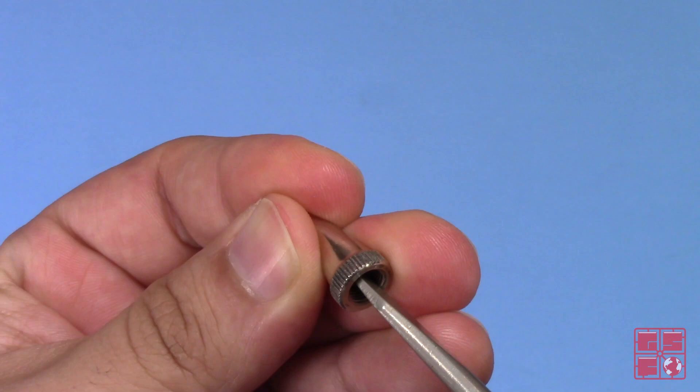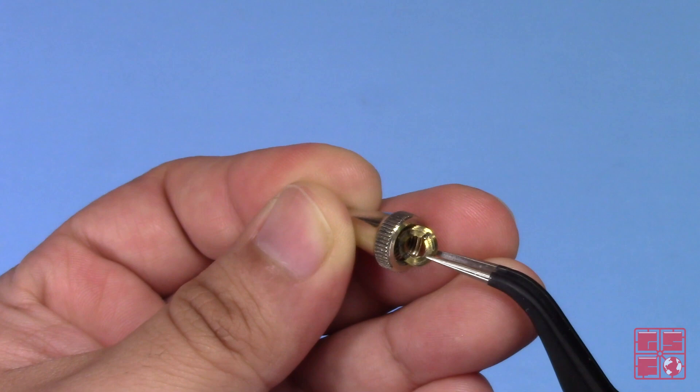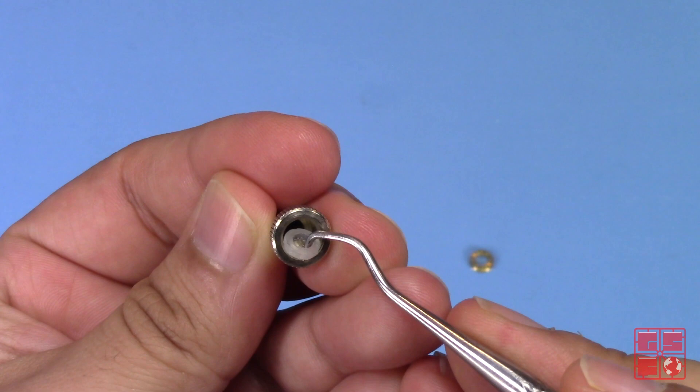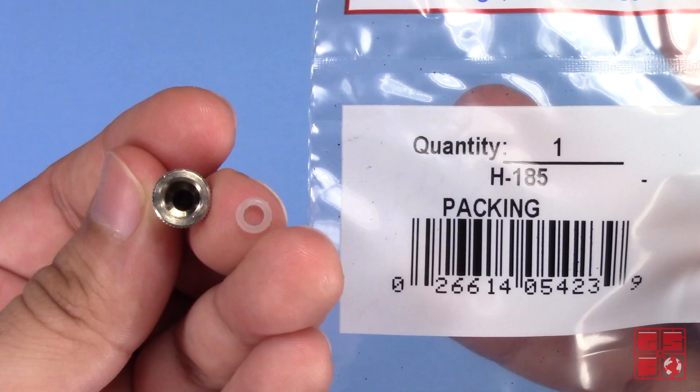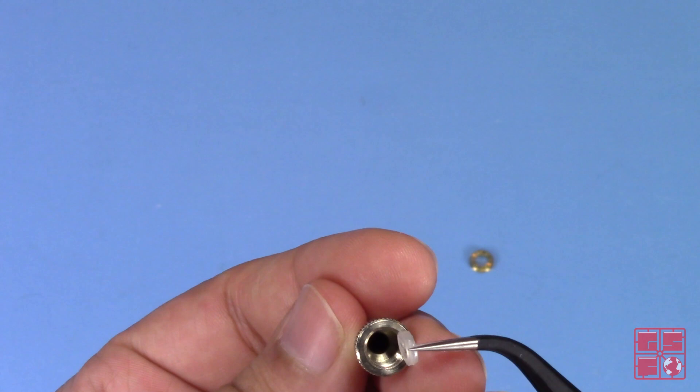I remove the packing brass nut using a small flat head screwdriver. Then using a curved scrap tool, I pull the needle packing. The packing seems okay at first, but compared to a new packing, it looks a tiny bit stretched out. It looks worn out.